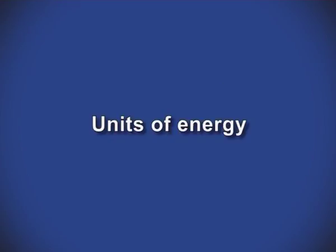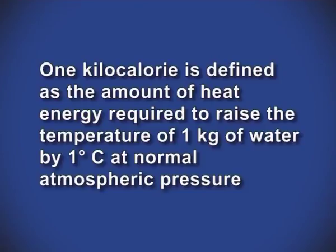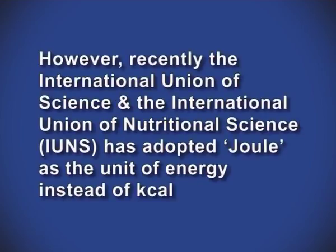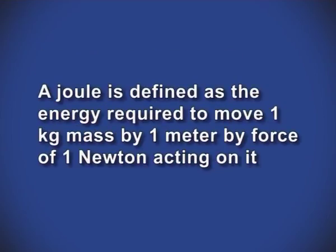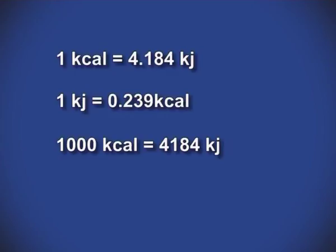All forms of energy are interconvertible. The energy value of a food is expressed in kilocalories. One kilocalorie is defined as the amount of heat energy required to raise the temperature of one kg of water by one degree Celsius at normal atmospheric pressure. The International Union of Nutritional Sciences (IUNS) has adopted joule as the unit of energy. One kilocalorie equals 4.184 kilojoules; one kilojoule equals 0.239 kilocalories; 1000 kilocalories equals 4184 kilojoules; and 1 millijoule equals 239 kilocalories.